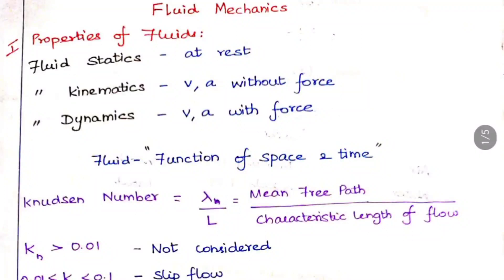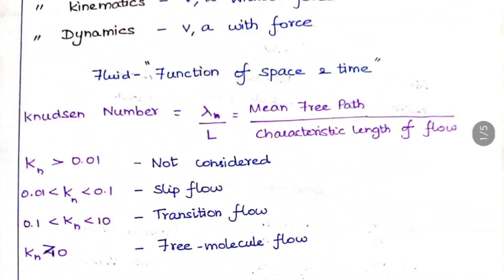Let us start with the Knudsen number. The Knudsen number is equal to lambda divided by L, where lambda is the mean free path — the average distance that a molecule of the fluid can travel between collisions — and L is the characteristic length of the flow.